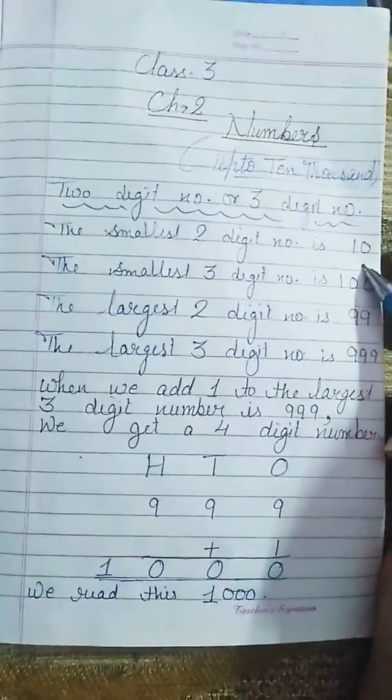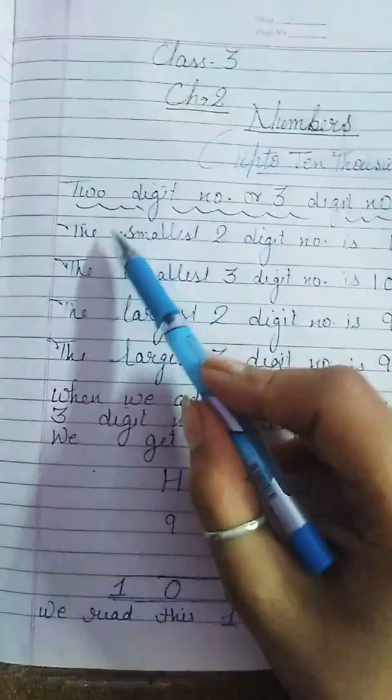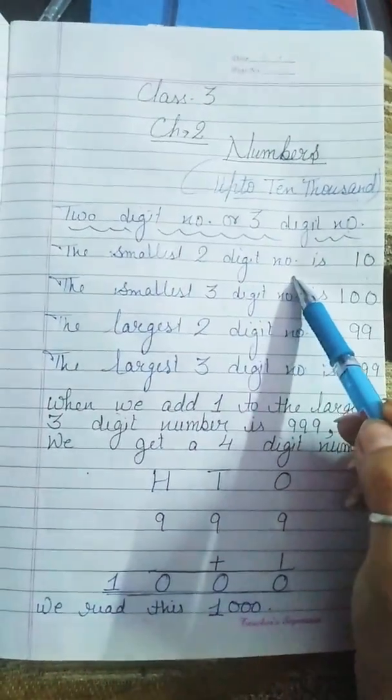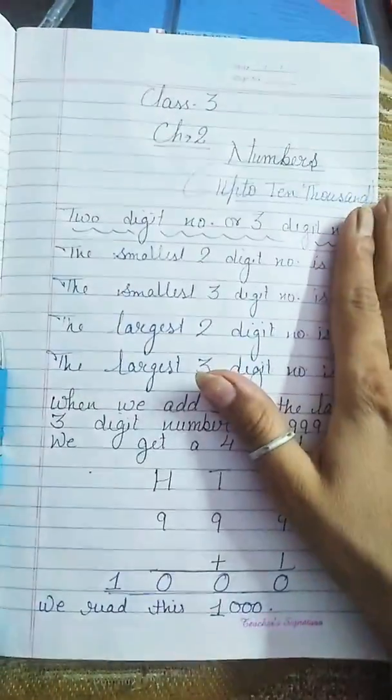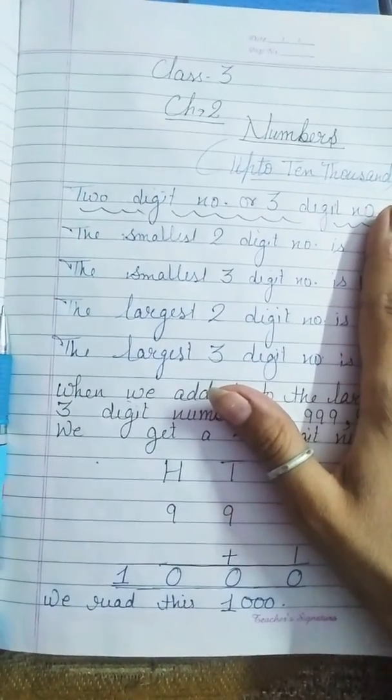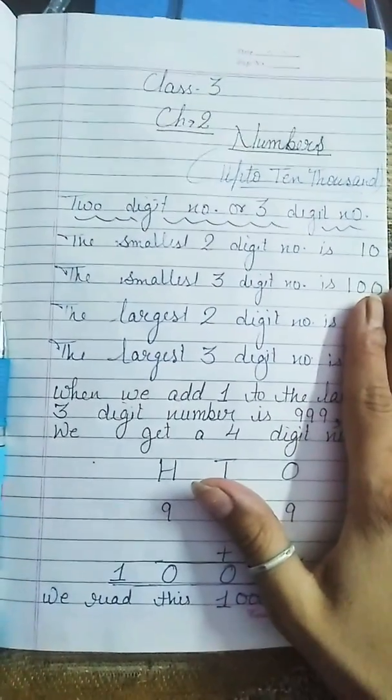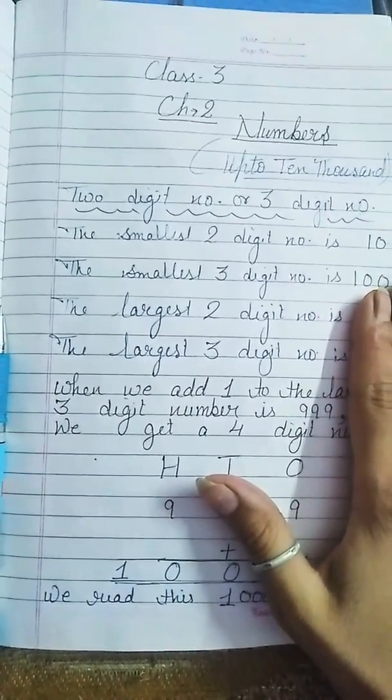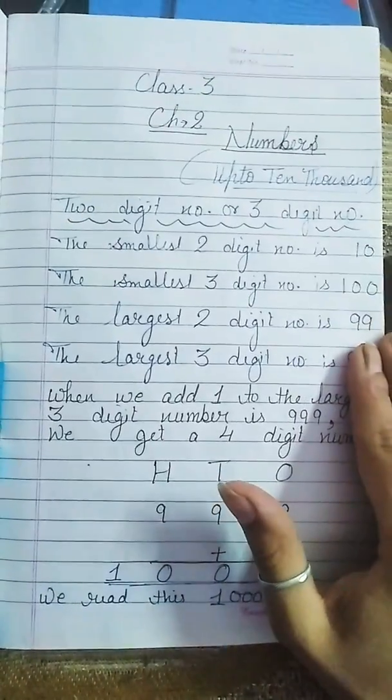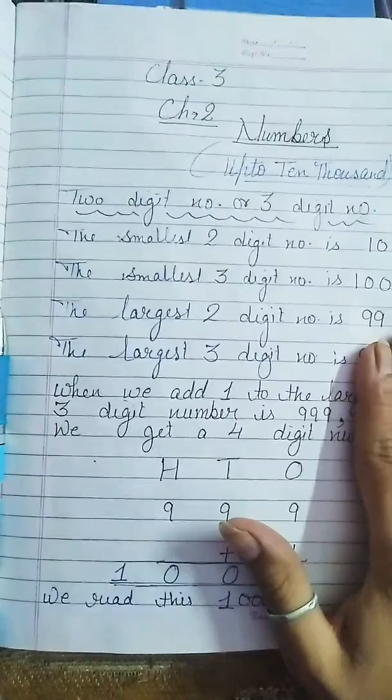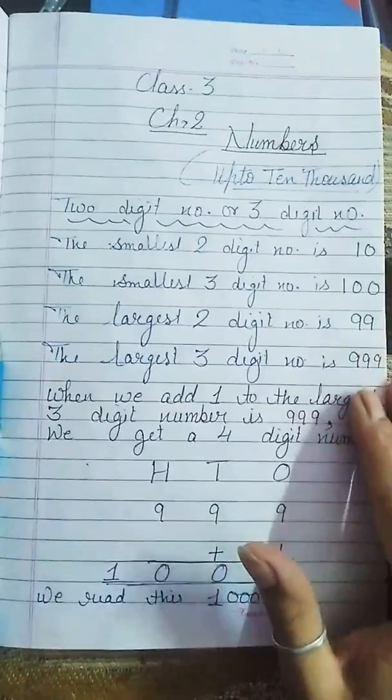Now 2-digit numbers and 3-digit numbers which you have studied in the previous class, you will recall them again. The smallest 2-digit number is 10. The smallest 3-digit number is 100. The largest 2-digit number is 99. Largest 3-digit number is 999.